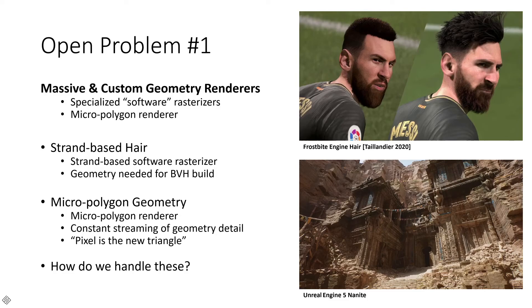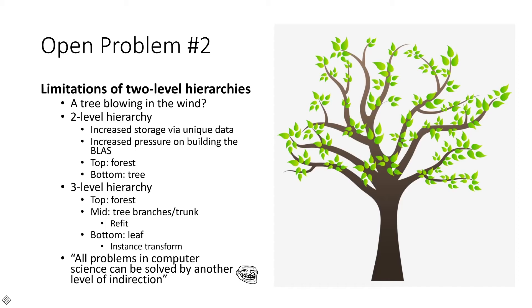In this world of hybrid pipelines, we see more custom geometry renderers. The amazing strand-based hair that the Frostbite team presented and shipped with EA Sports FIFA is a good example of a very optimized compute-based software rasterizer — and with ray tracing, that software rasterizer has to interface and feed into the ray tracing acceleration structure, which is a challenge. Also, Unreal 5's micropolygon geometry renderer Nanite brings super high levels of detail to real time where pixel is the new triangle, meaning constant streaming of geometry detail that can greatly affect performance of acceleration structures.